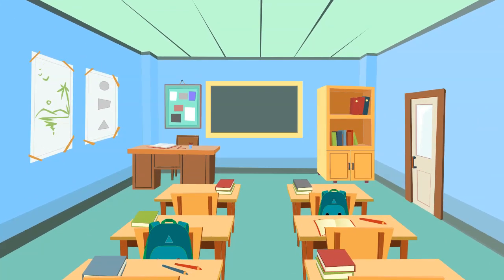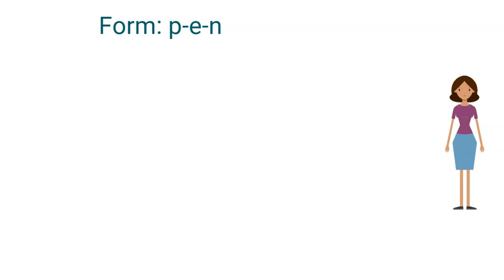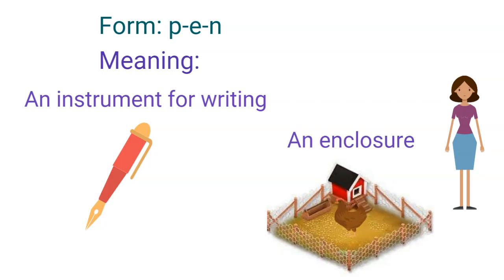The second property is arbitrariness. A word in a language is a connection between form and meaning — image and understanding. We see or hear the form of the word and we understand its meaning. The connection between form and meaning is arbitrary, meaning there is no natural connection between the form of a word and its meaning — they are randomly selected. For example, the form PEN has two meanings: an instrument for writing, and an enclosure where we keep animals. Same form, totally different meanings — so there is no connection between form and meaning.